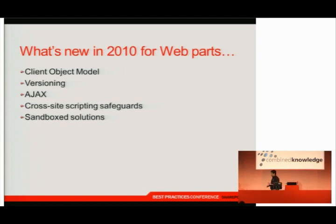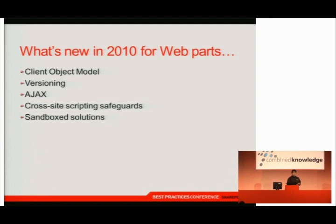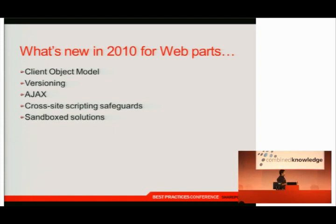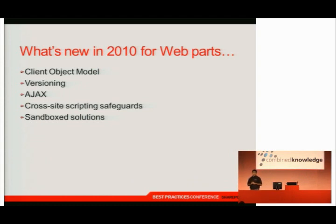Let's look at life in three different view frames. First, what's new inside of 2010 for web parts. Inside of 2010 we have the client object model — a JavaScript library designed to allow us to interact with our SharePoint sites. We also have web part versioning. How many of you have worked with web parts in 2007? How many are familiar with the problem with web parts on publishing pages in 2007?